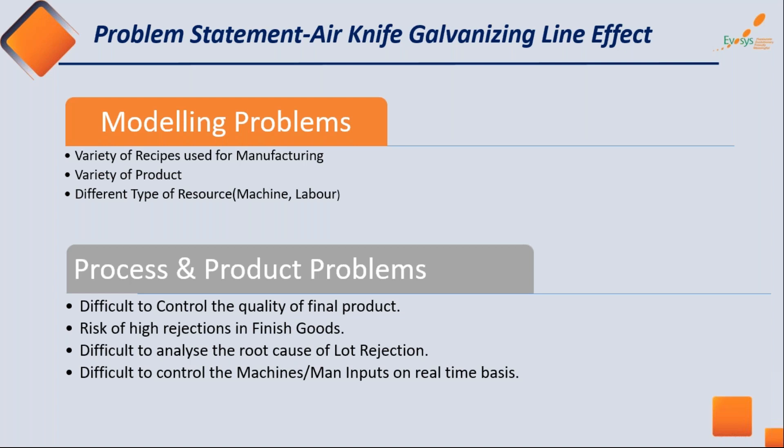It is difficult to analyze the root cause of lot rejections because there are many parameters affecting the final product quality. Going back to investigate which parameter caused the issue is difficult even with PLC/SCADA systems, because those systems don't give you the exact relationship between the outputs and inputs. It is also difficult to control machine and manual inputs on a real-time basis.